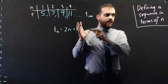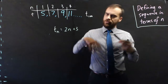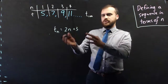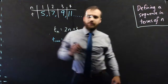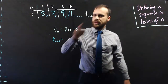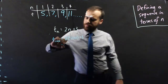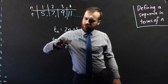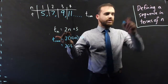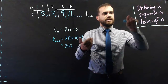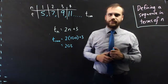Now I have a sequence in terms of n. Coming back to our original question, if that's our sequence in terms of n, then T(100) is going to be really easy to figure out. It's going to be 2 times 100 plus 3, which is 203. So now that I know the first 4 terms and I've got a sequence defined in terms of n, I can substitute in 100 to find 203.